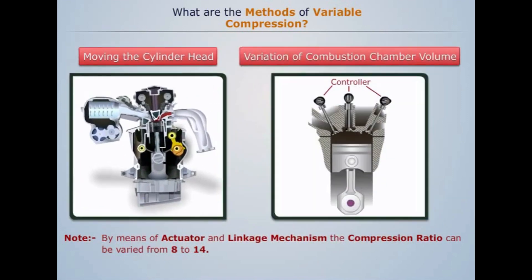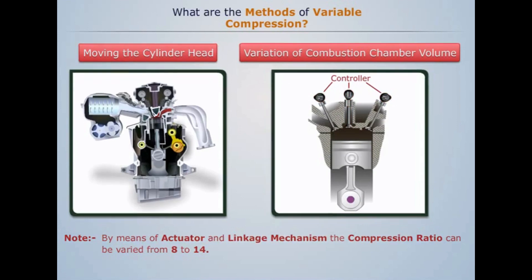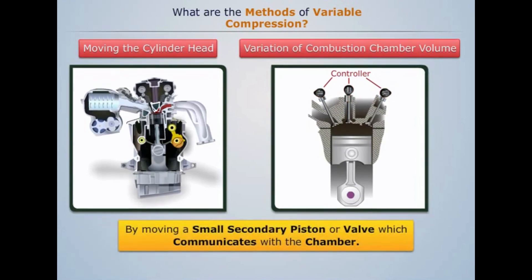Variation of combustion chamber volume: In order to vary the combustion chamber volume, a secondary piston or valve is used. The piston could be maintained at an intermediate position corresponding to the optimum compression ratio for a particular condition. The combustion chamber volume is increased to reduce the compression ratio by moving a small secondary piston or valve which communicates with the chamber.